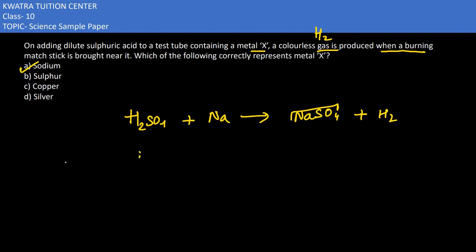The next option is copper. If we have H2SO4 with copper, it won't be able to displace hydrogen because copper is less reactive than hydrogen.